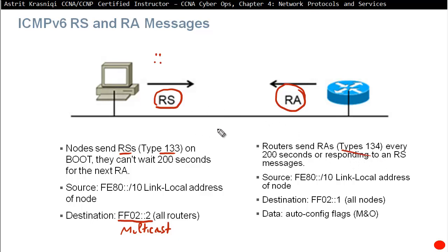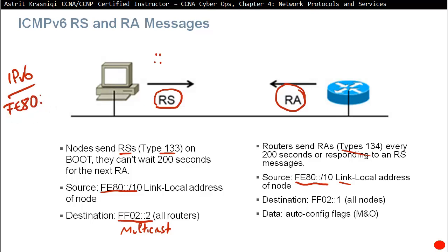Once the router hears that Router Solicitation message, it sends a Router Advertisement message towards the PC. Router Advertisement is type 134 and is sent every 200 seconds as well. The source address used is the router's own link-local address — fe80 — since every time we enable IPv6, the device gets a link-local address starting with fe80. The Router Advertisement message goes to ff02::1, which is the multicast address for all nodes, since IPv6 does not have a broadcast address.